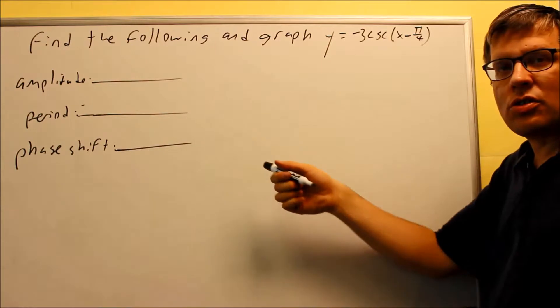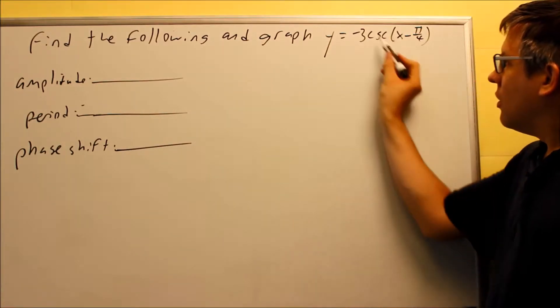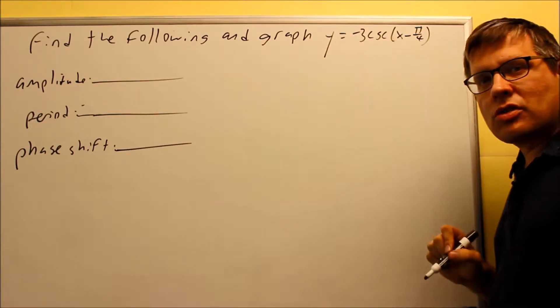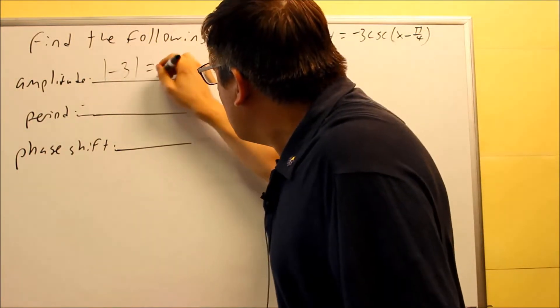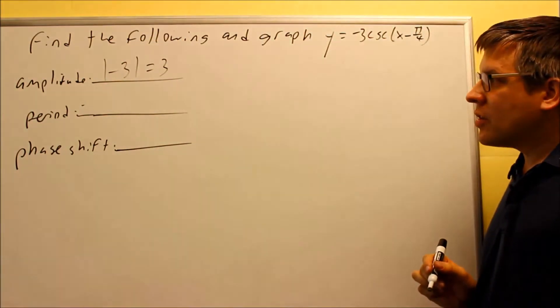So let's fill out this information here. First of all, amplitude. The number in front of cosecant this time is negative 3, so we're going to do absolute value negative 3 is going to be positive 3.